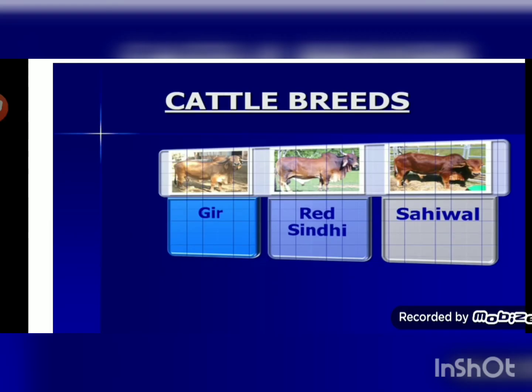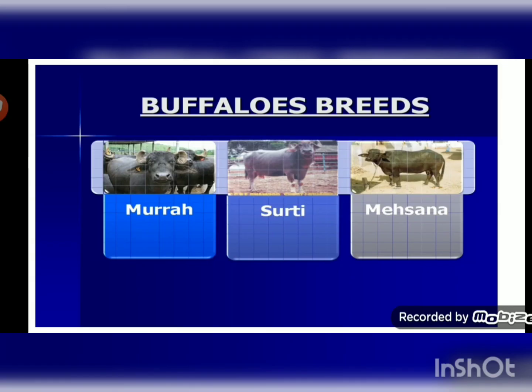Here you can see pictures of cattle breeds: Gir, Red Sindhi, and Sahiwal — all Indian breeds. You can also see breeds of buffalo such as Murrah, Surti, and Mahsana. These cattle are used for the production of milk.